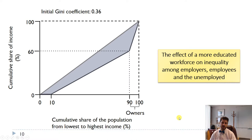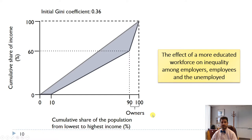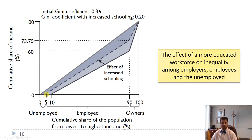Here's another example: education. We start from the same baseline — 10% unemployed, 80% working and receiving 60% of income, 10% owners receiving 40%. If workers become more educated, their productivity increases and so do their wages. We can think of moving up the wage curve as both the wage and profit curves shift up. The unemployment rate falls to 5%, workers now receive 73.75% of income, and owners get the remaining 26.25%.